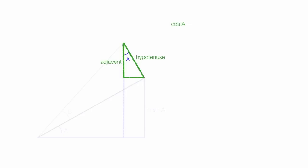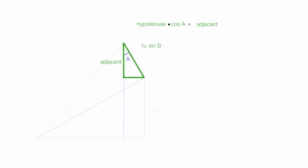Now recall — cosine a is equal to the adjacent side divided by the hypotenuse. So I can write this as hypotenuse times cosine a is equal to the adjacent side, which we want to know. The hypotenuse is h2 sine b, so I have h2 sine b times cosine a is equal to the adjacent side — and that is the side we're looking for.